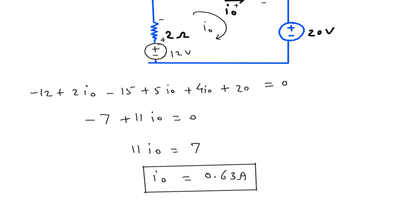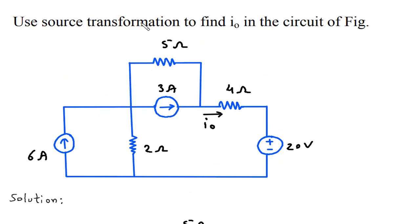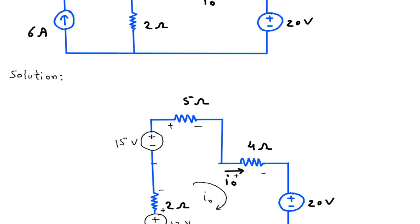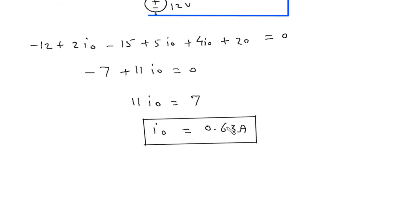We have to find I O using source transformation. So, this is the value of I O using source transformation. For electrical and electronics engineering related questions and answers, visit the link in the description below.